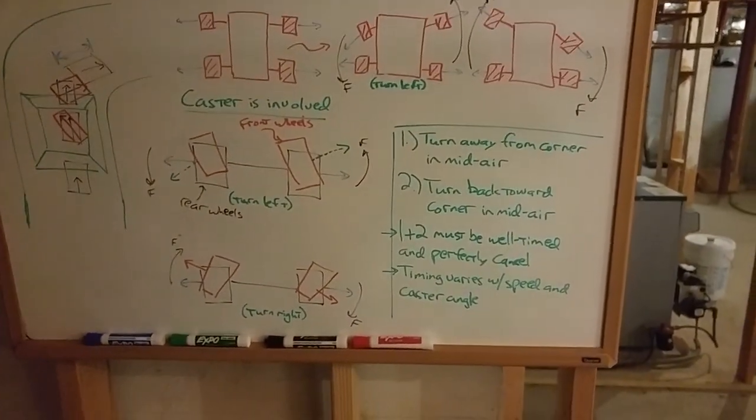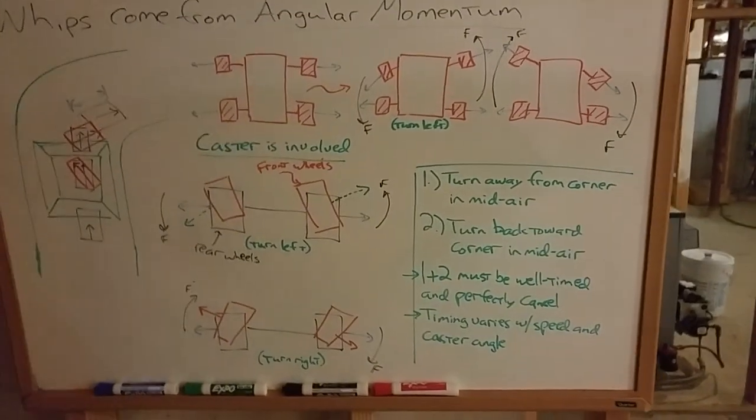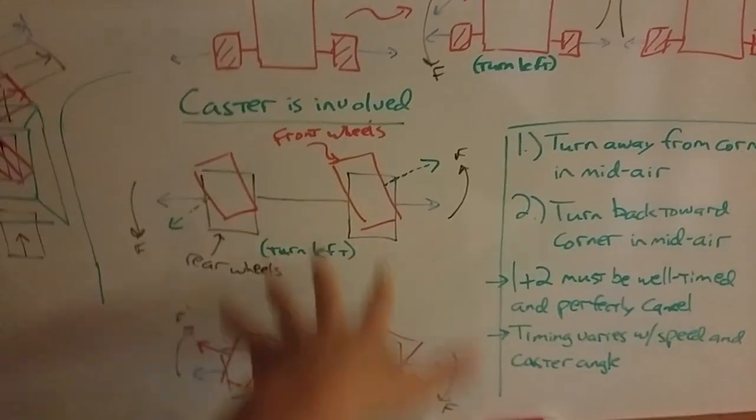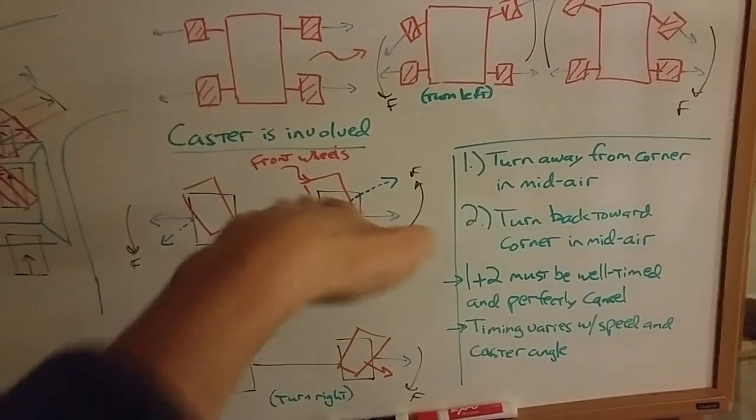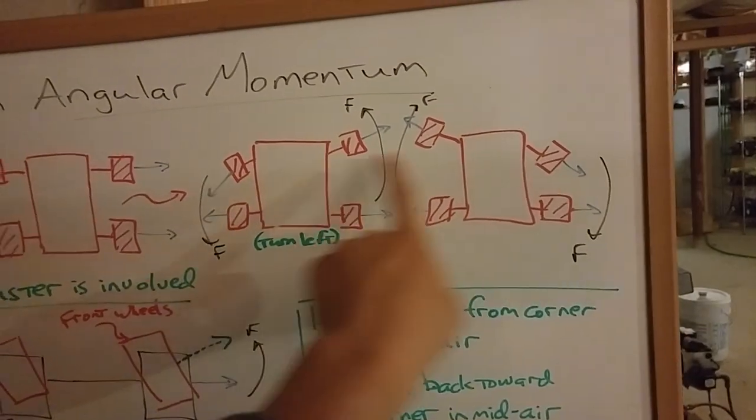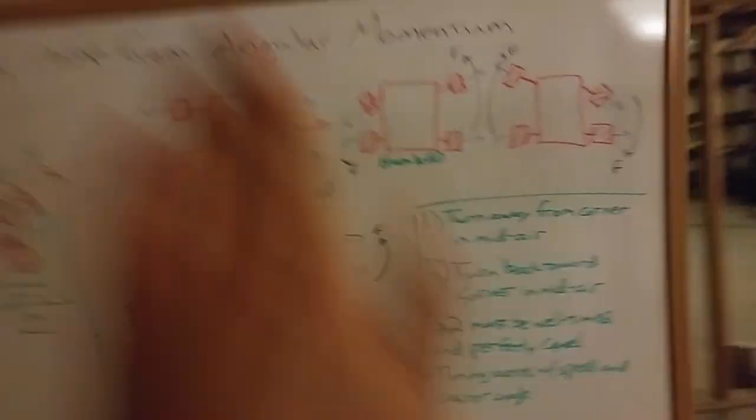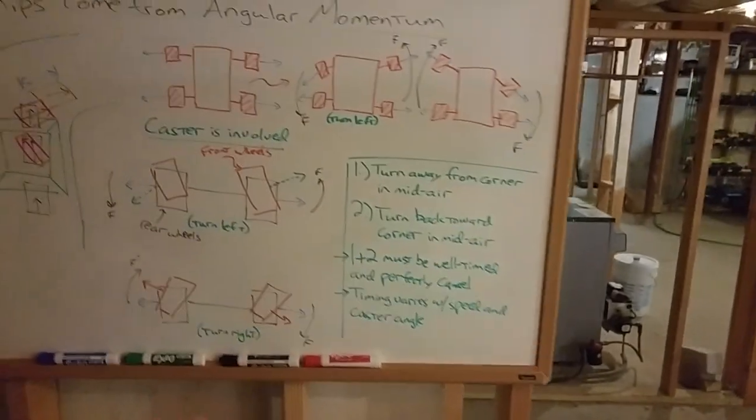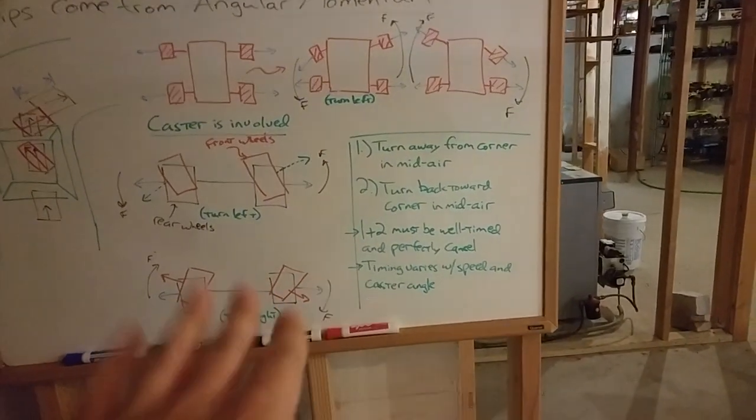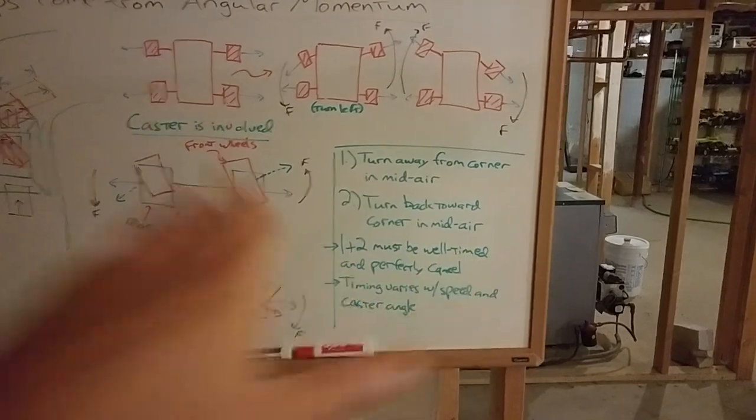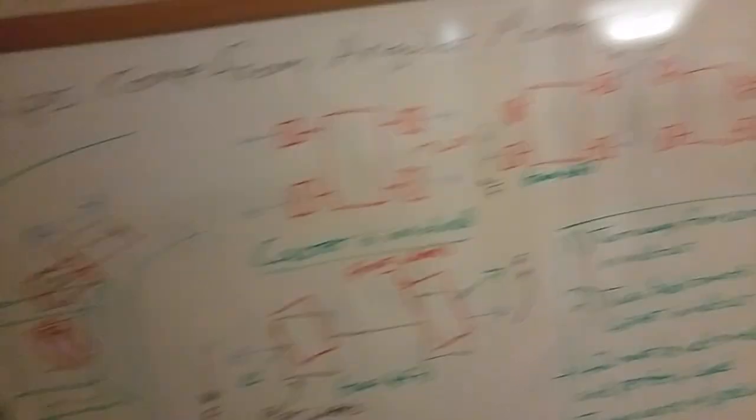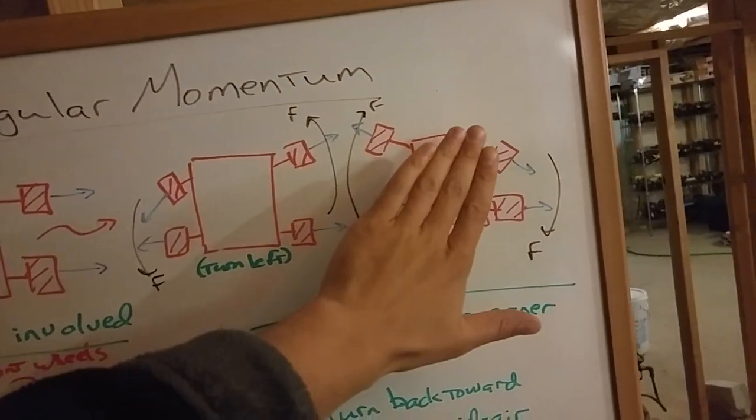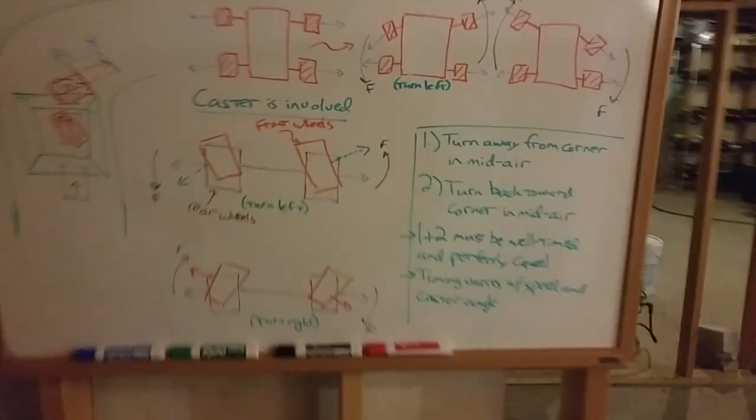And so then you might think, okay, well, what if I had zero caster angle? In theory, if you had zero caster angle, you could just take the jump and not even turn left, just turn into the turn, and that would just rotate the car a little bit toward the direction of the turn, and then you land and you take off. But the problem is,